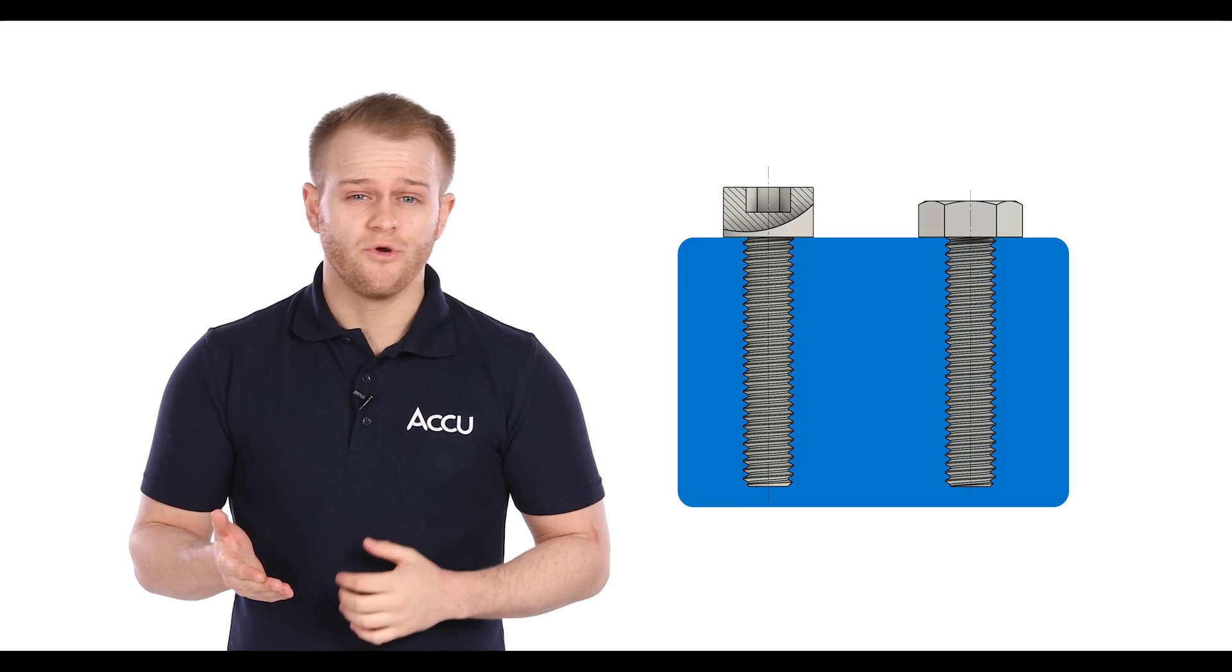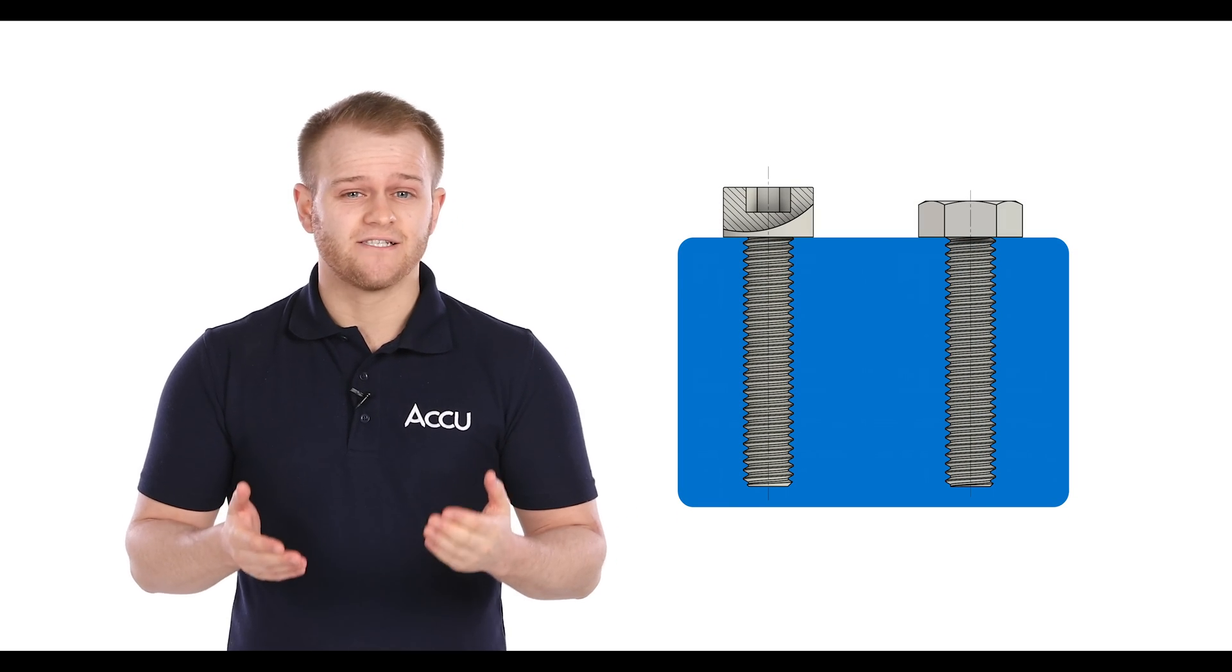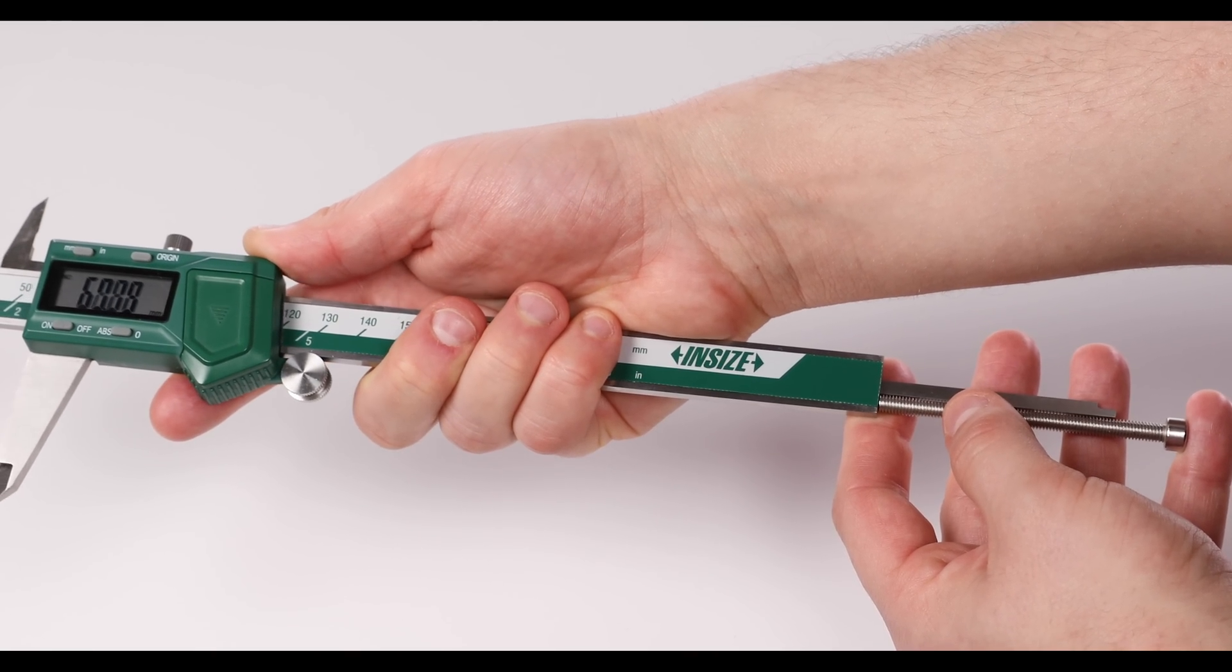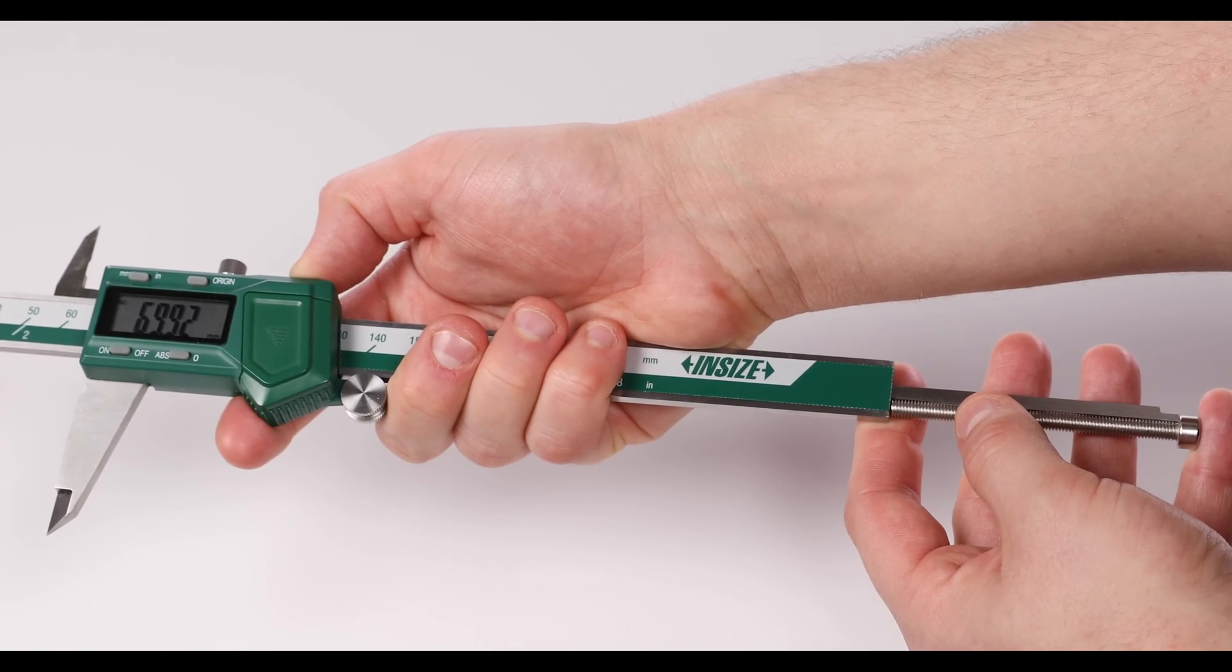So for the vast majority of fasteners like the cap head screw and the hex bolt where the head sits on top of a surface, to find their nominal length we simply measure the distance from below the head to the end of the thread.